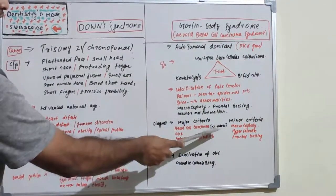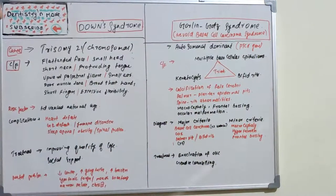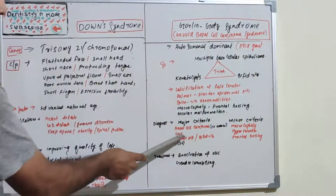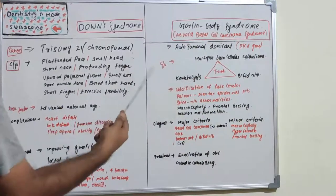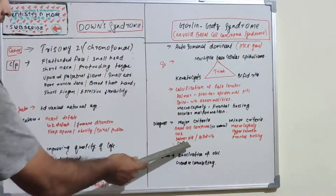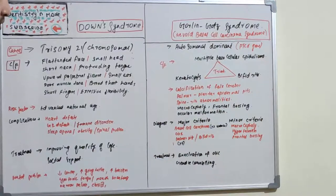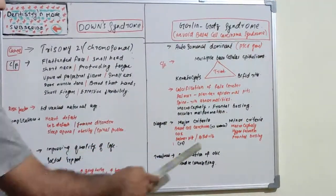Major criteria include the presence of more than two basal cell carcinomas under 20 years, odontogenic keratocysts, and palmar pits if more than three. Also, bifid ribs.